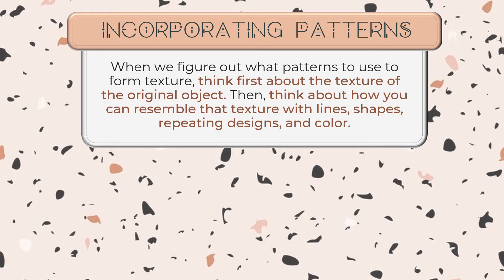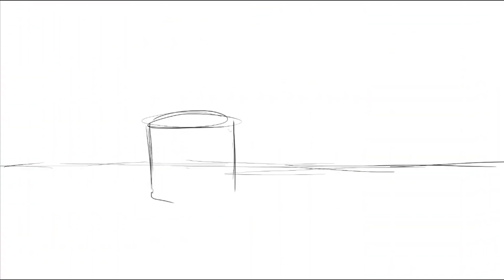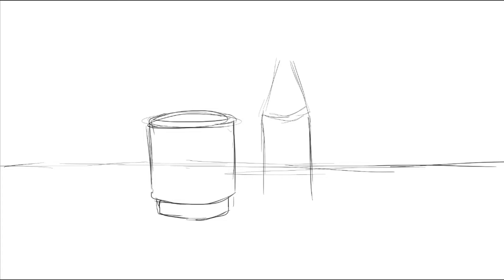Then think about how you can resemble that texture with lines, shapes, repeating designs, and colors. For example, let's try to draw a still life artwork, or objects that don't move. Most still life artworks are of fruits and vases, so let's try that here. I'll start out by sketching my objects as you normally would start a drawing.